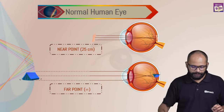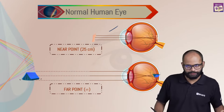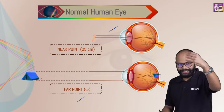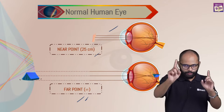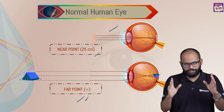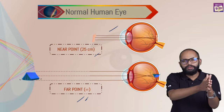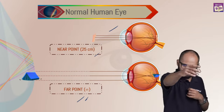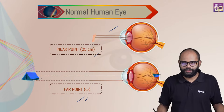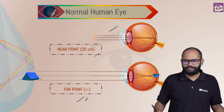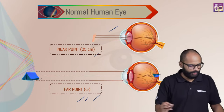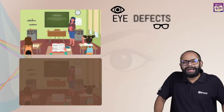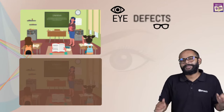For a normal human eye, the near point is 25 centimeters and the far point is infinity — very far. Now let's talk about eye defects, because for a normal human eye the near point is 25 cm and far point is infinite, but it's not always like this.